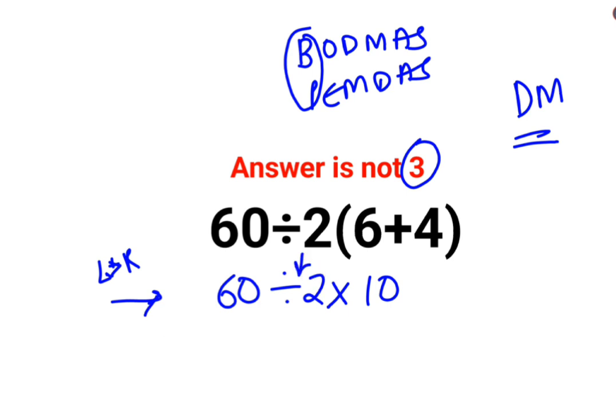So 60 divided by 2 is 30, multiplied by 10. The answer for this question is supposed to be 300. I hope this is very clear to everyone.